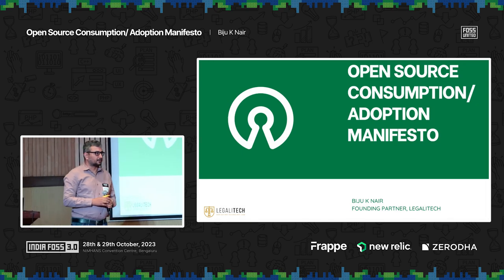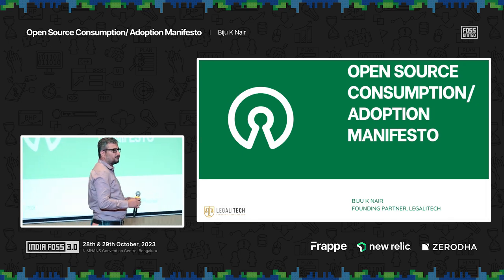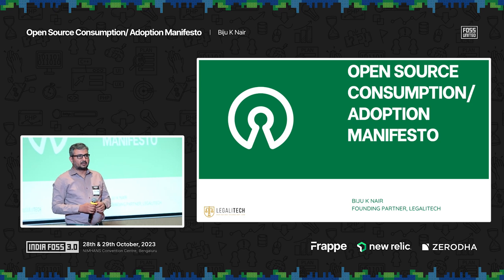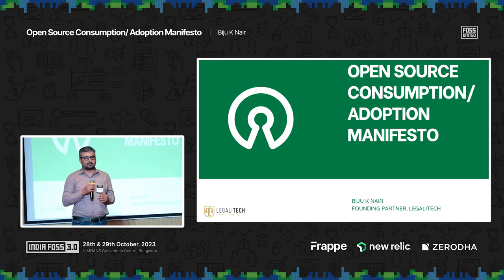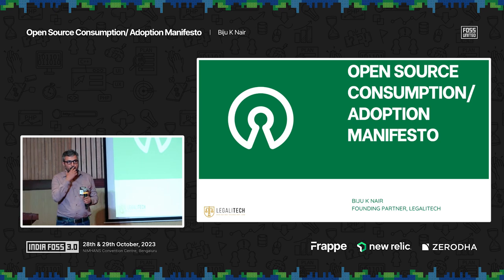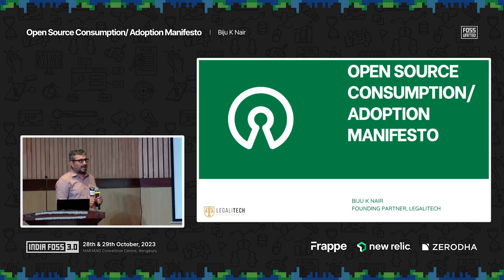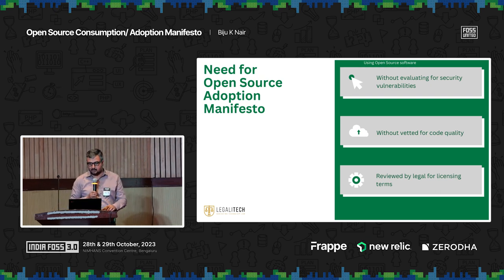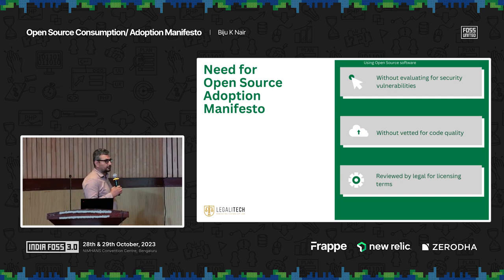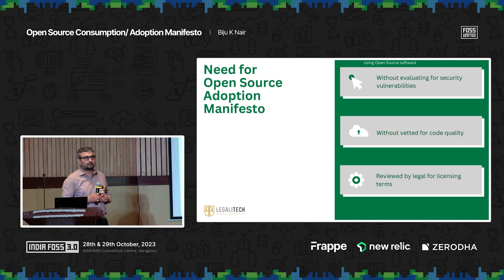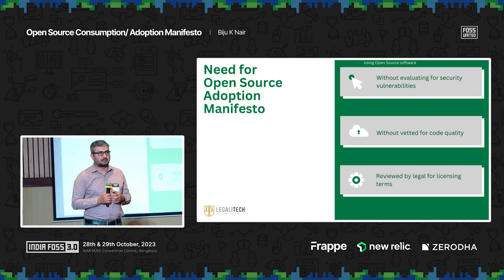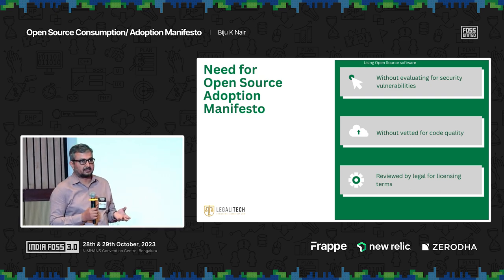We all use open source, so do we think of some of the issues which can crop up when we adopt open source, or any software for that matter? Should we have a manifesto — these are the things I should do when I'm adopting or using open source? Because open source being a public good, without evaluating for security vulnerabilities, without vetting it for code quality, or not reviewing for license information or legal information — like a copyright notice or an attribution notice — because each of those gives you certain rights.